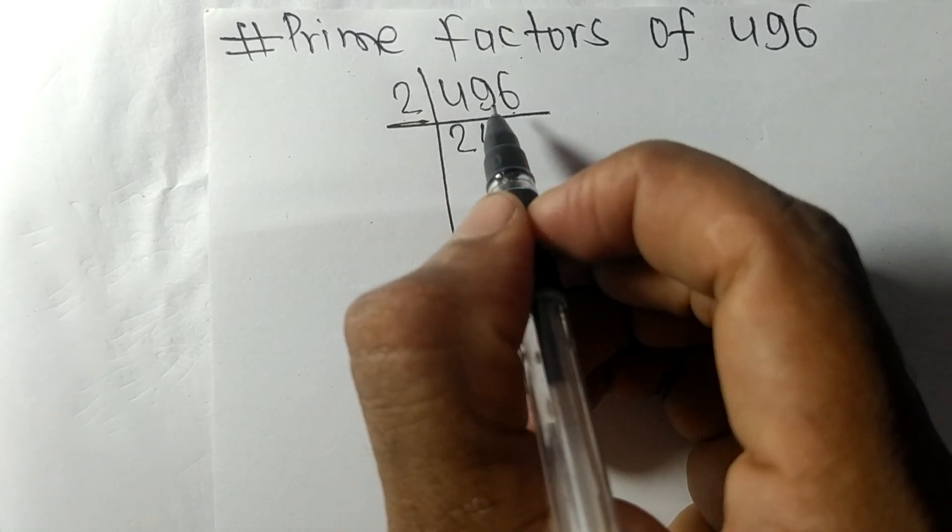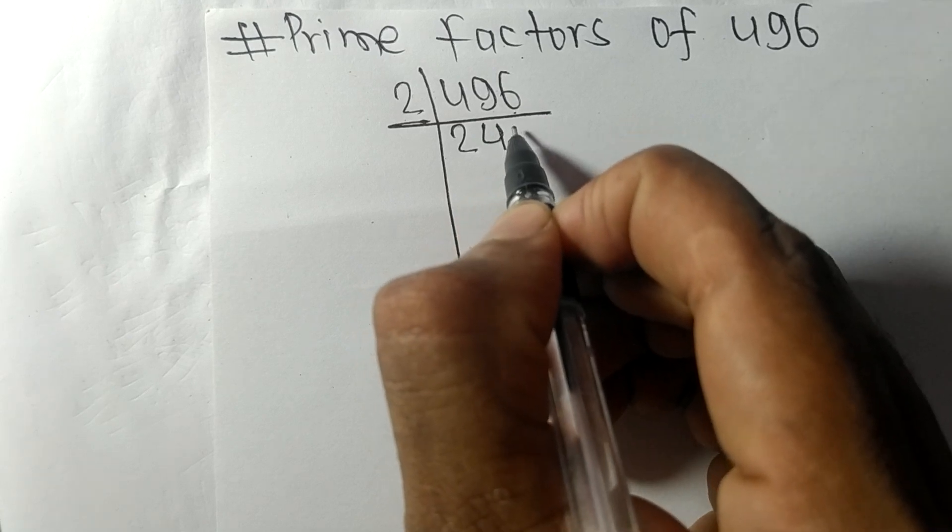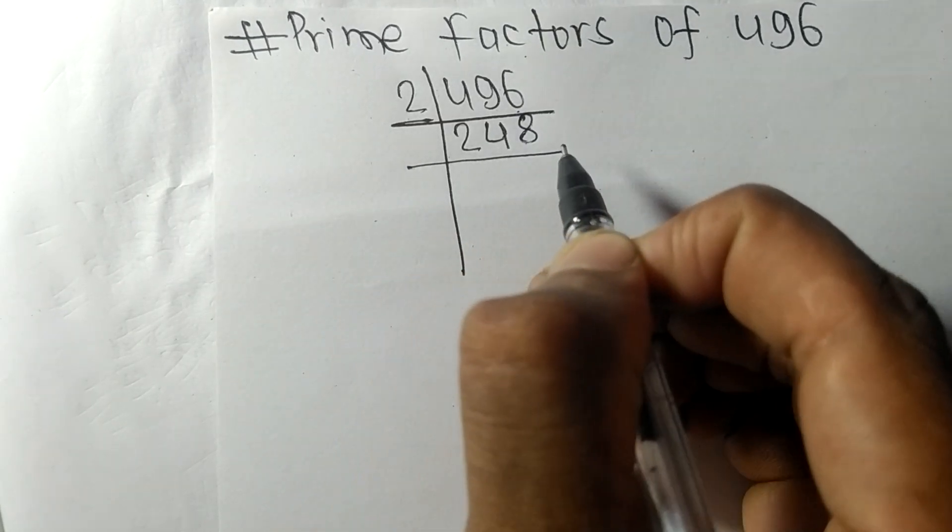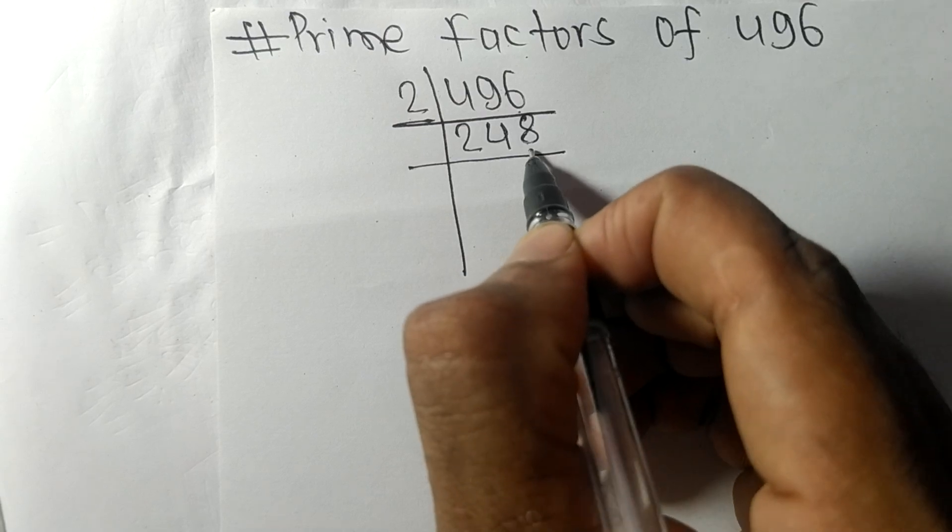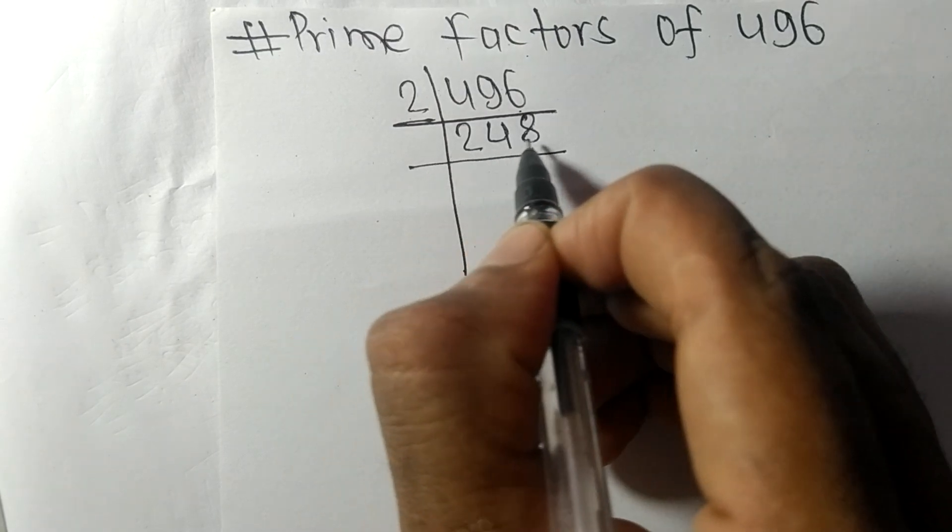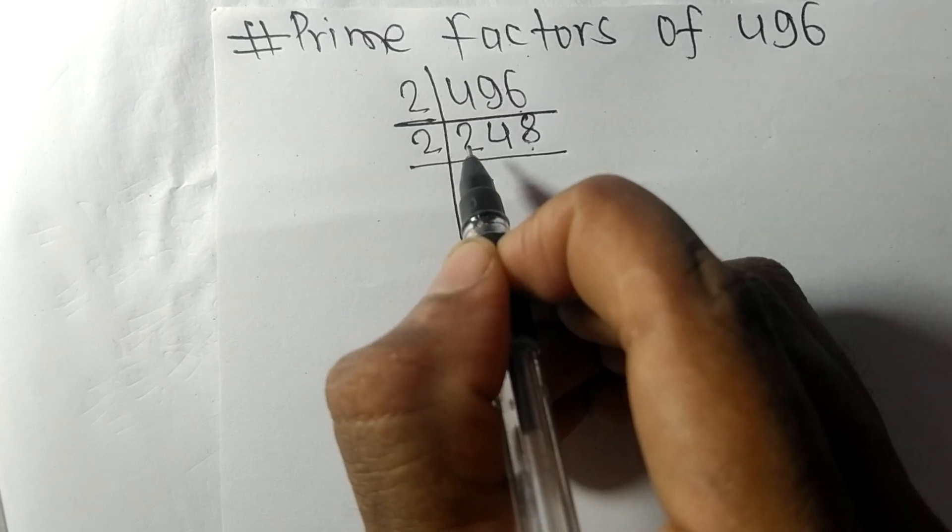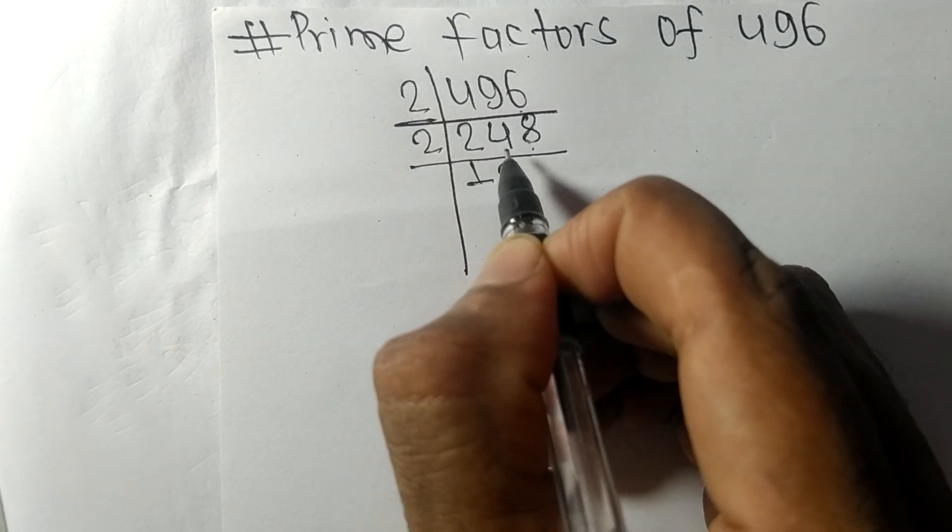Two times 8 is 16. Again we have even number 8 at last, so it is divisible by 2. Two times 1 is 2, two times 2 is 4, two times 4 is 8. Again we have even number 4 at last, so it is divisible by 2.